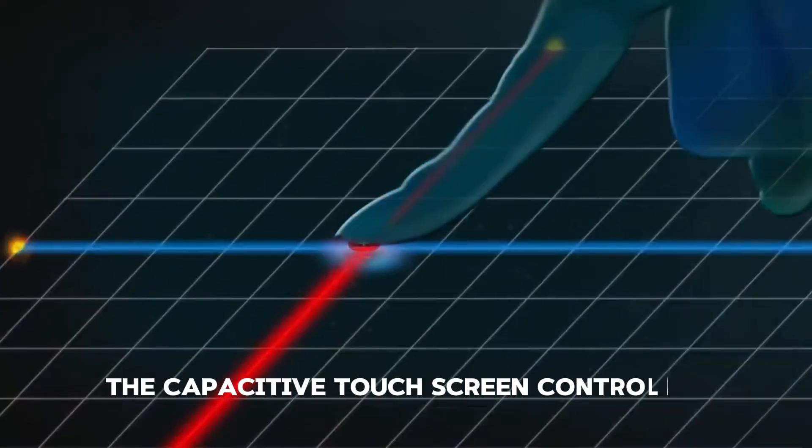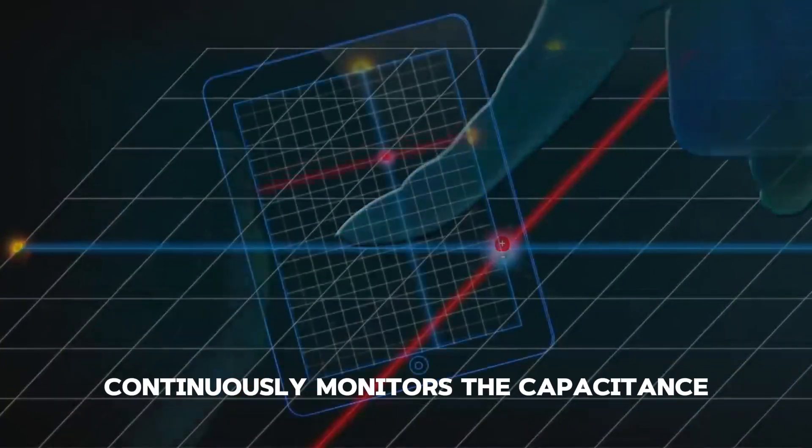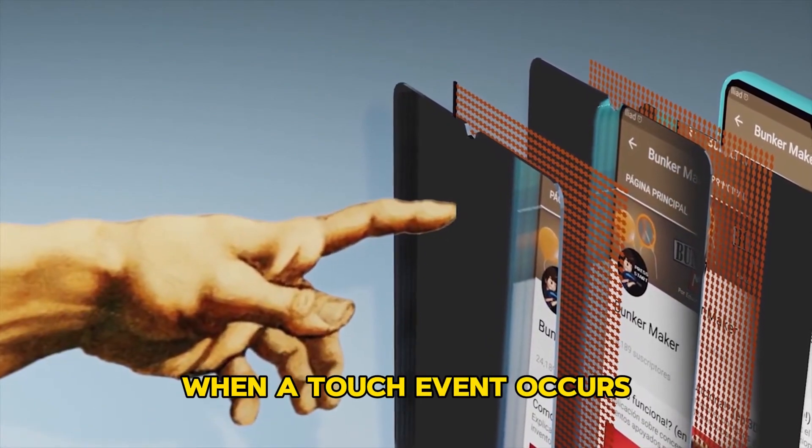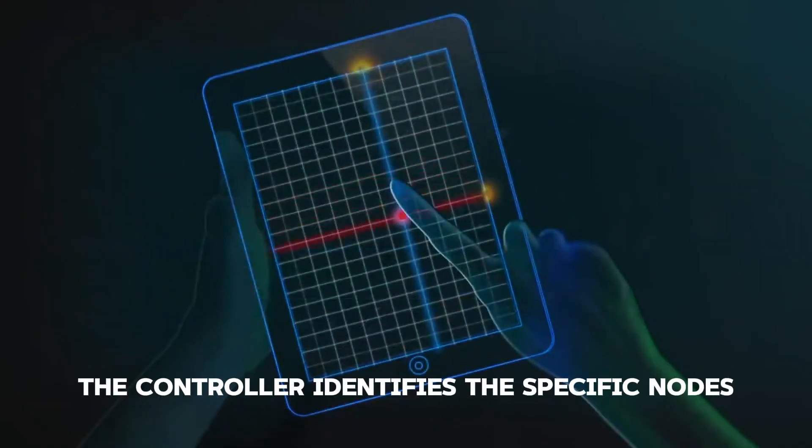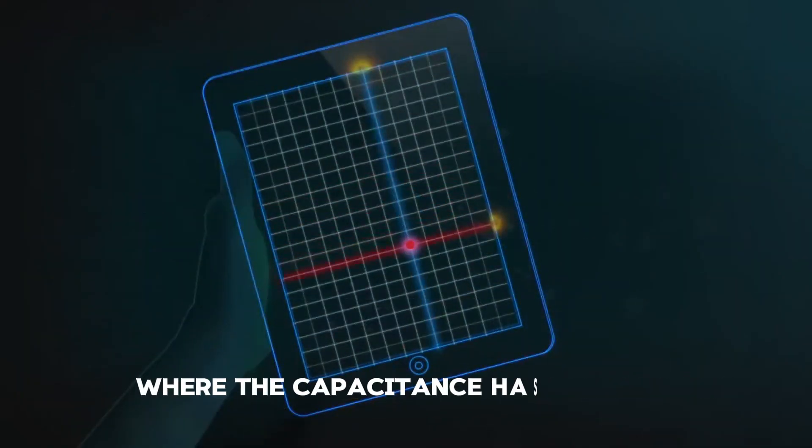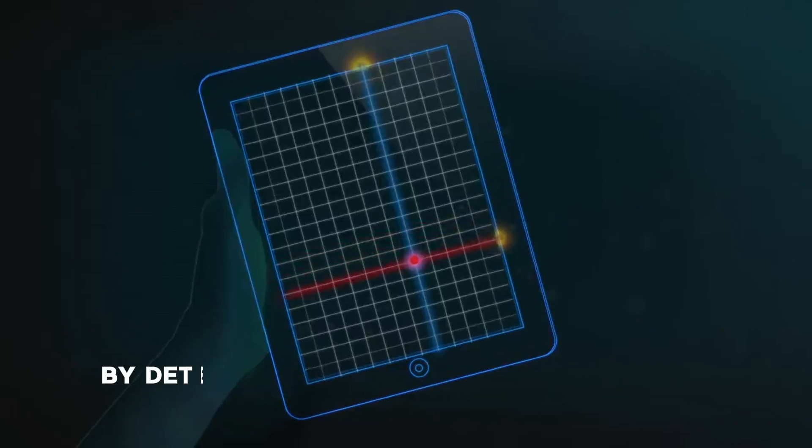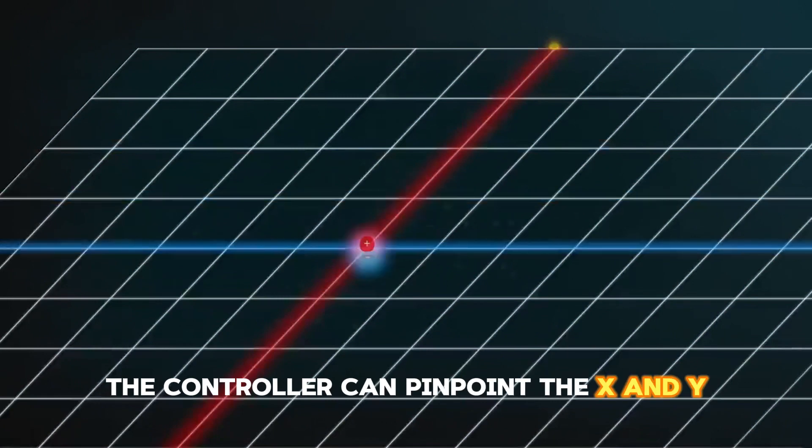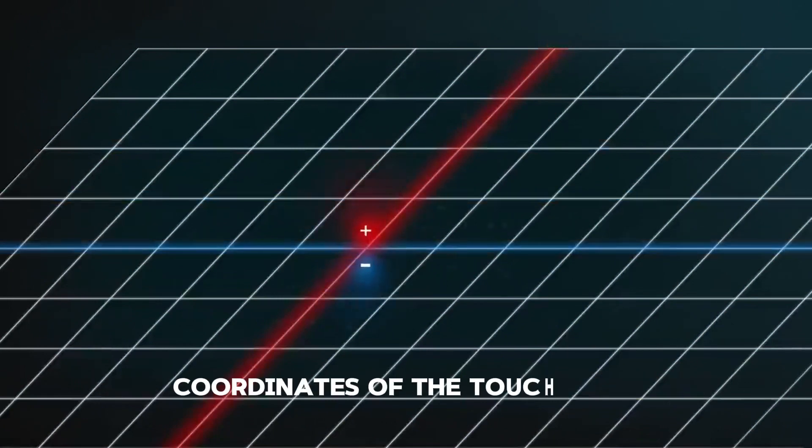Touch detection. The capacitive touchscreen controller continuously monitors the capacitance at each node in the grid. When a touch event occurs, the controller identifies the specific nodes where the capacitance has changed. By determining which rows and columns are affected, the controller can pinpoint the x and y coordinates of the touch point.